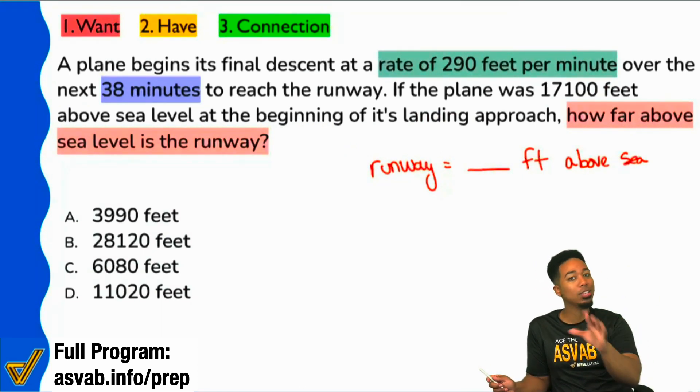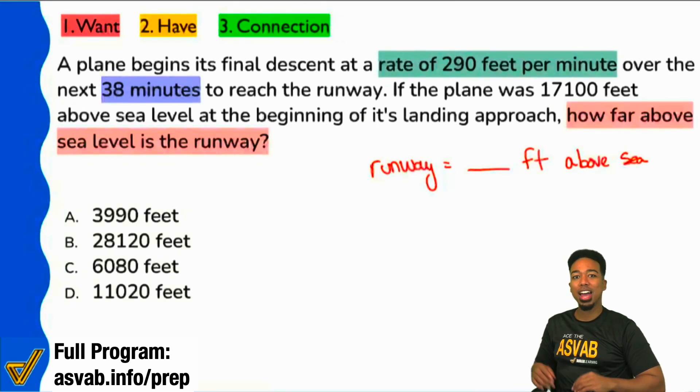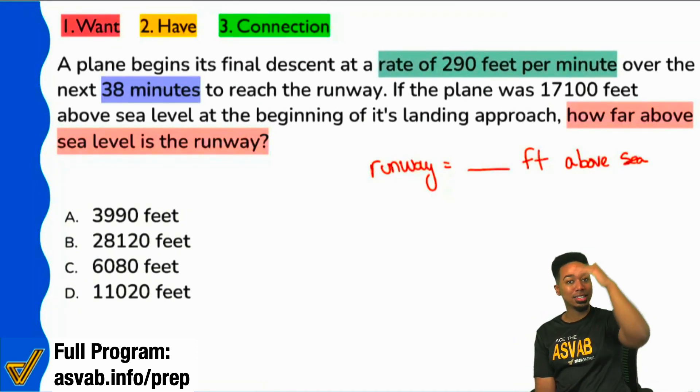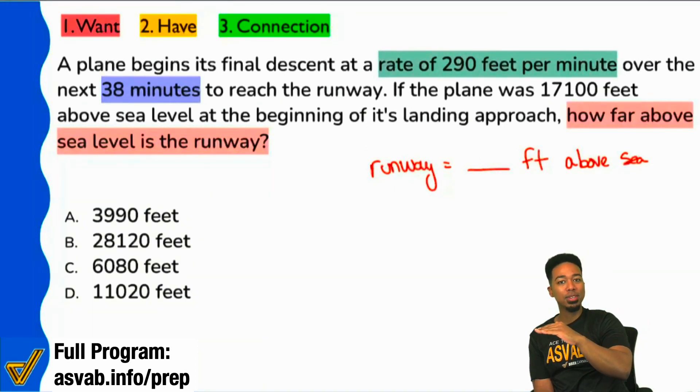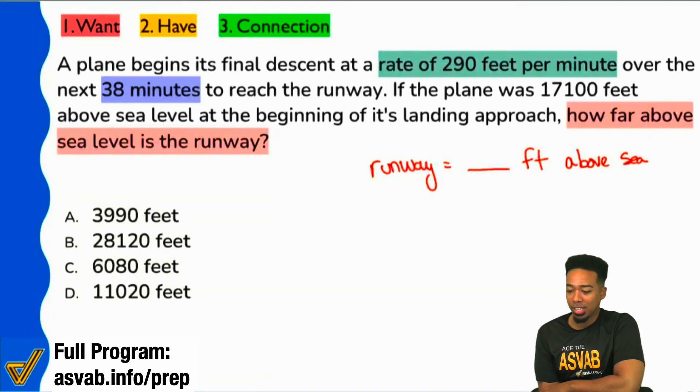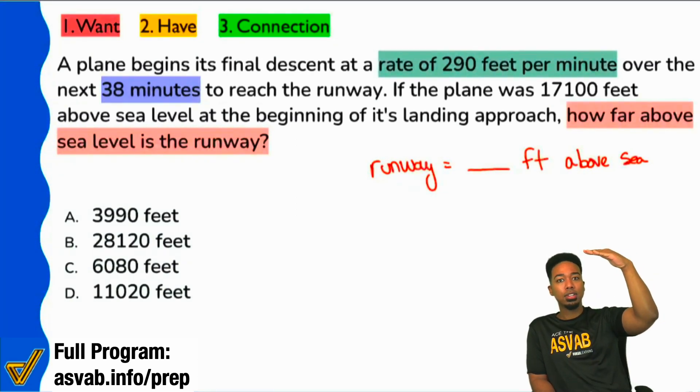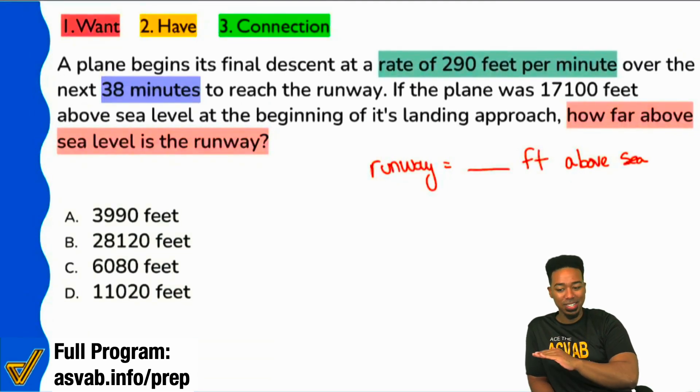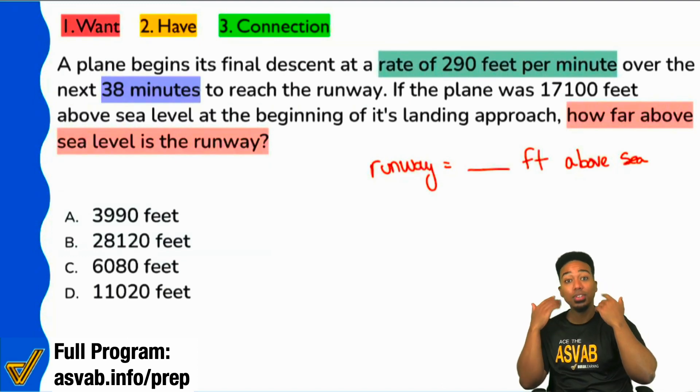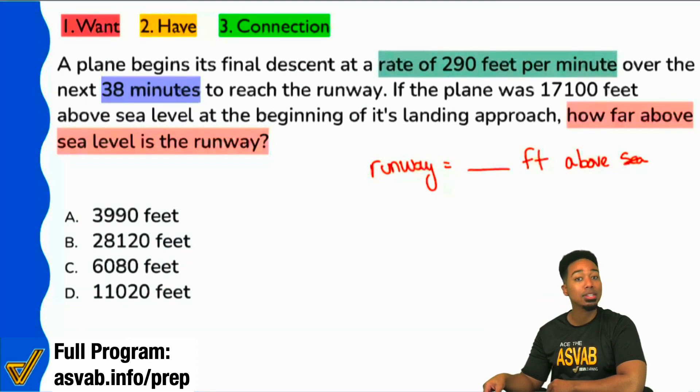So now I have a better picture, everyone, and you tell me if this works out for you too. We have this plane that's beginning its final descent. So it's trying to land. It starts here, it goes down at a rate of 290 per minute for 38 minutes. Then eventually we land on the runway and we want to know where this runway is in terms of altitude or its height above sea level. Does that make any more sense than it did before? We have this plane that was up here. It was 17,100 feet. All this rate and time happens. And then we land here. We want to know where this is.